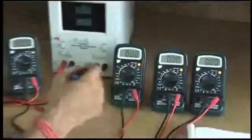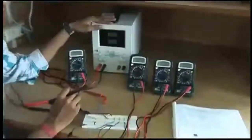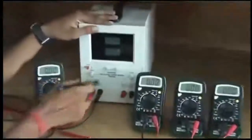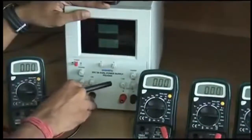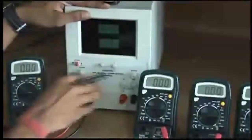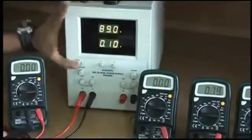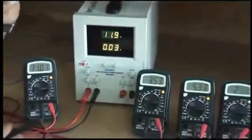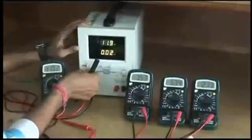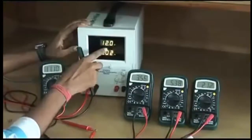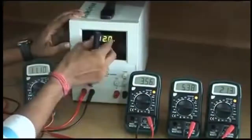To give supply to this circuit we are using a dual power supply. We are using one of the modes of the dual power supply to give supply of 12 volts. Let us turn on the circuit. Here you can see it is around 11.9, let's make it exactly 12 volts. This is the voltage we are giving to the circuit.